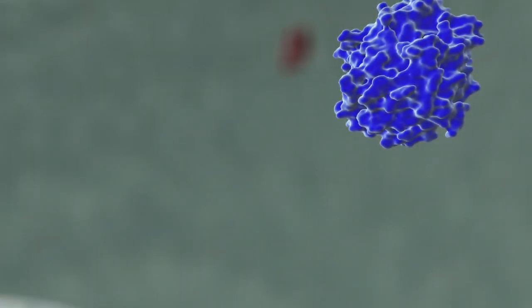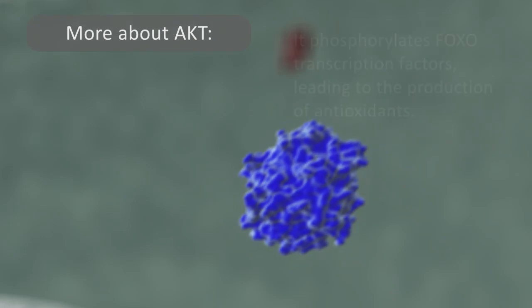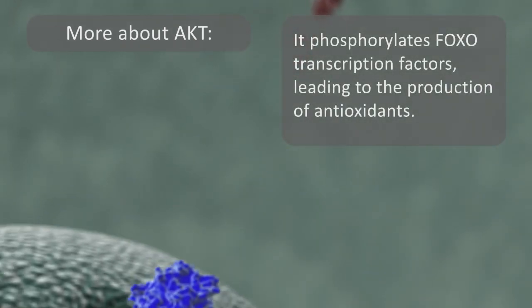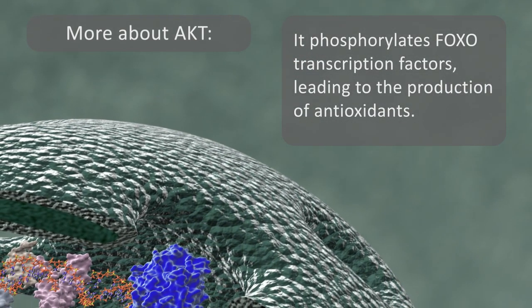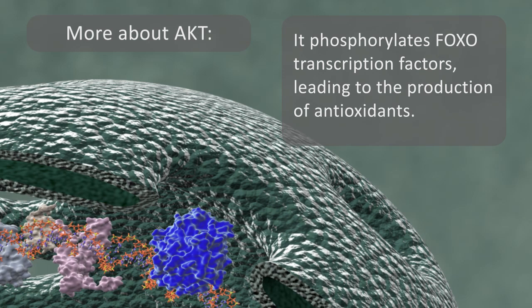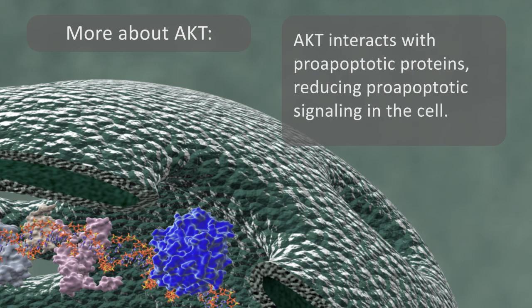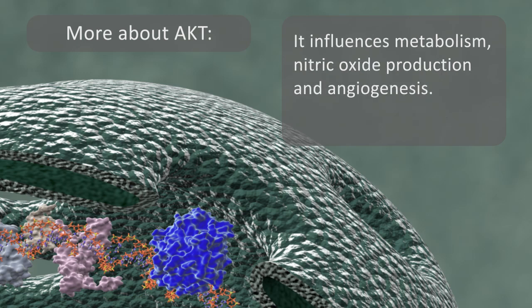AKT can also translocate to the nucleus, where it phosphorylates FOXO transcription factors, leading to the expression of genes involved in oxidative phosphorylation and energy production, upregulation of chaperones and heat shock proteins, and the production of antioxidants. Activated AKT can also interact with pro-apoptotic proteins, reducing pro-apoptotic signaling in the cell. AKT also influences metabolism, nitric oxide production, and angiogenesis.